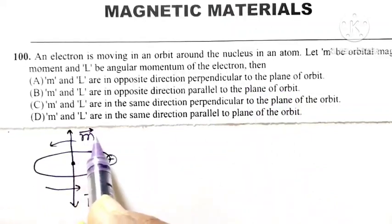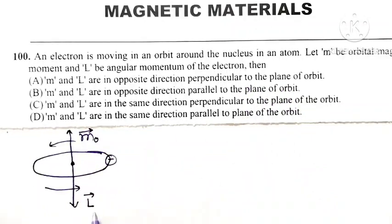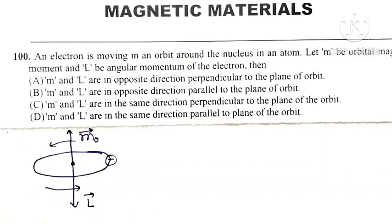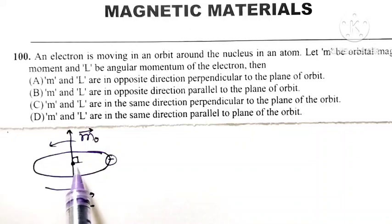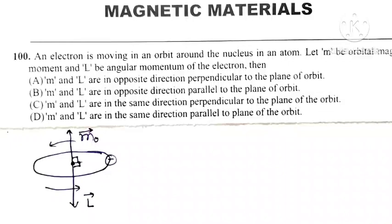Remember, orbital magnetic moment and angular momentum of electron both act along the axis of rotation, meaning both are perpendicular to the plane of orbit and they are opposite in direction.